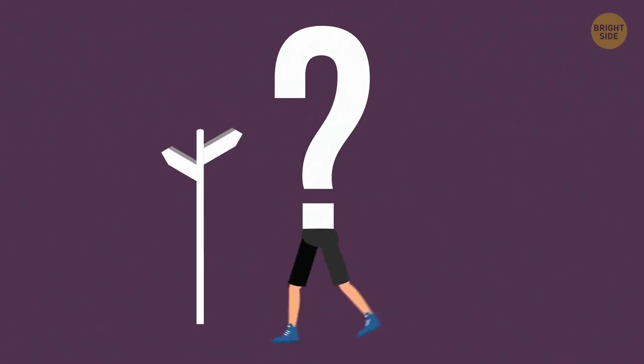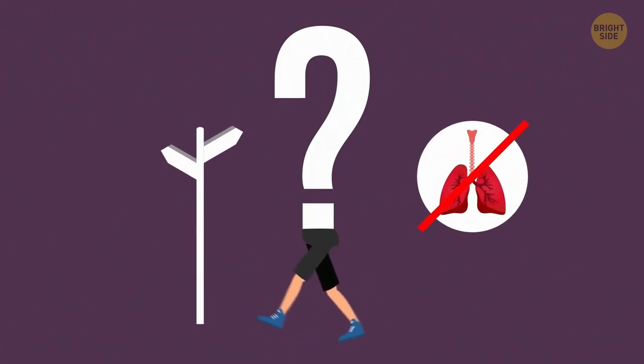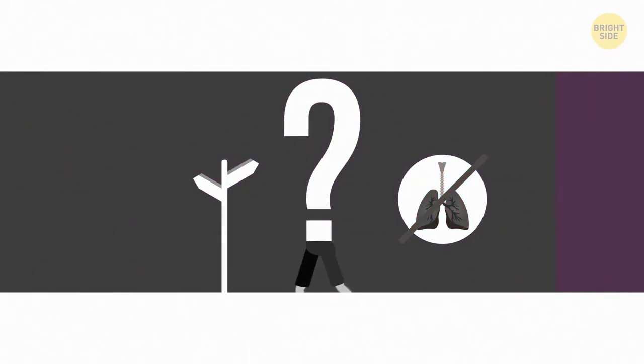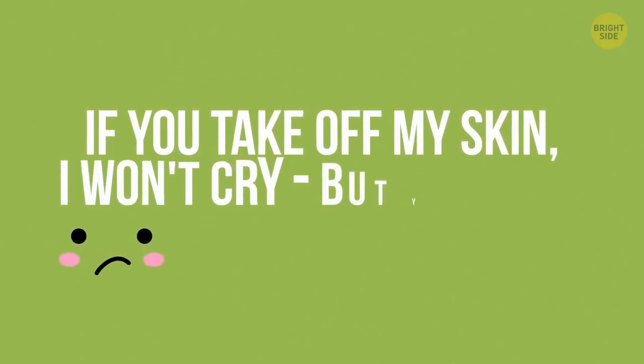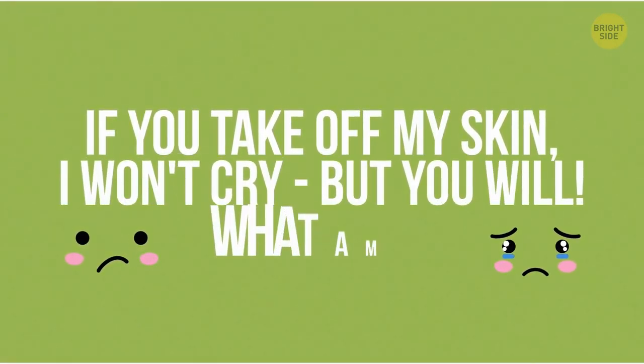19. It runs forever, but never moves from one place. It doesn't have lungs or a throat, but can roar. A waterfall. 20. If you take off my skin, I won't cry, but you will. What am I? An onion.